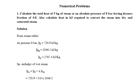Today we will take numericals based on steam formation. The first numerical: calculate the total heat of five kilograms of steam at a pressure of 9.8 bar having dryness fraction 0.8. Also calculate the heat in kilojoules required to convert the steam into dry saturated steam. In this numerical, five kilograms of steam is given at a specified pressure and dryness fraction, and we must find how much energy is required to convert the wet steam into dry saturated steam.